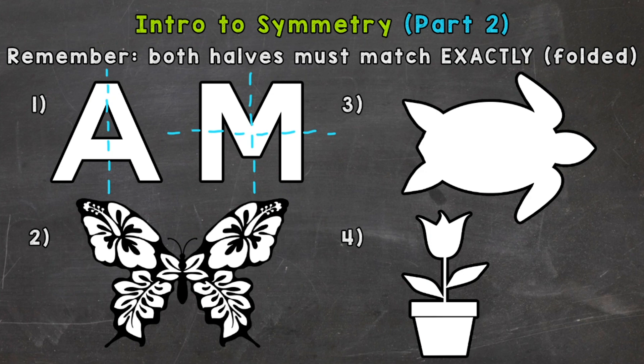Now number two is the most complex figure in this video, because look at all the details within that butterfly. All of those have to match as well for the whole figure to be symmetrical. And just like the A and M, we can draw a vertical line of symmetry there, and when we fold both those halves on top of each other, they would match exactly. So number two is symmetrical.